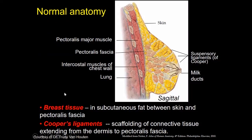The breast tissue basically lies between the subcutaneous fat, which is located between the skin and the pectoralis fascia. So you'll have skin, subcutaneous fat, some breast tissue and a branching ductal system. All of that tissue is supported by the Cooper's ligaments, which is basically connective tissue that extends from the dermis back to the pectoralis fascia. The breast is lying on top of the pectoralis muscle.